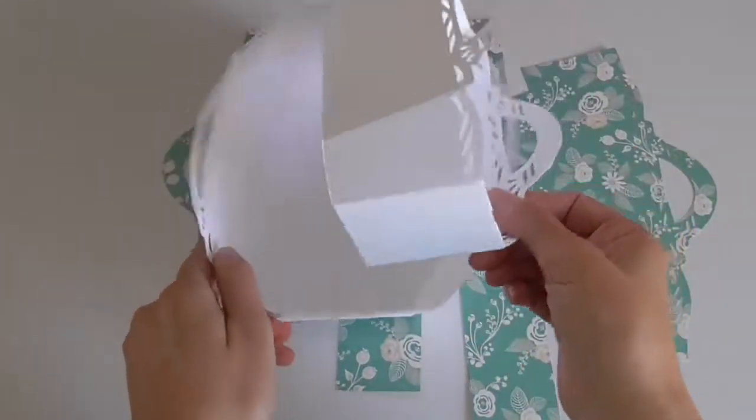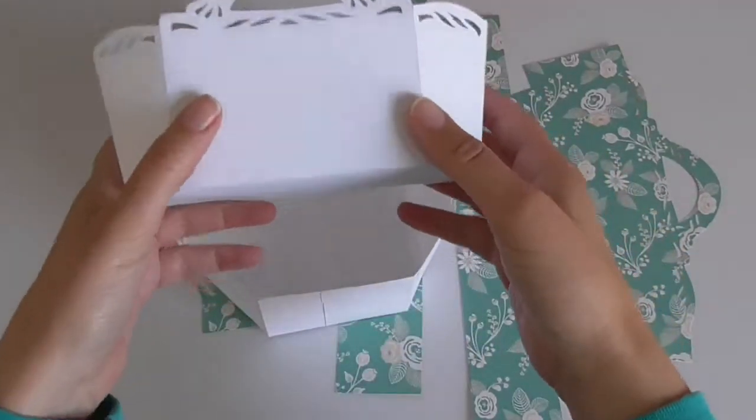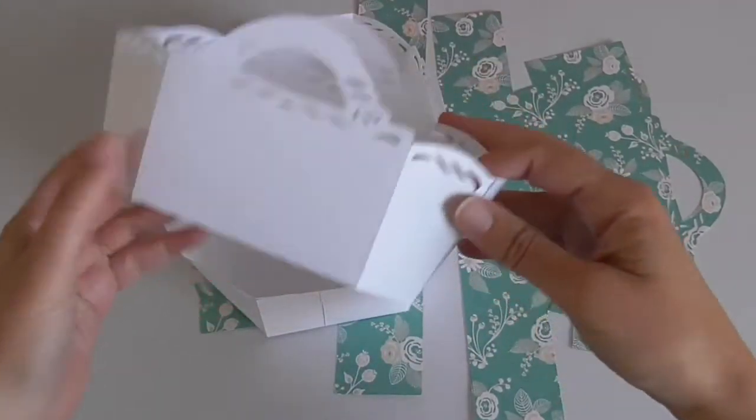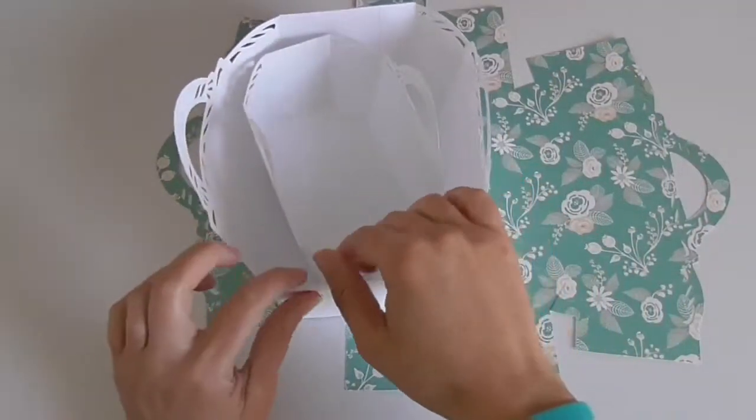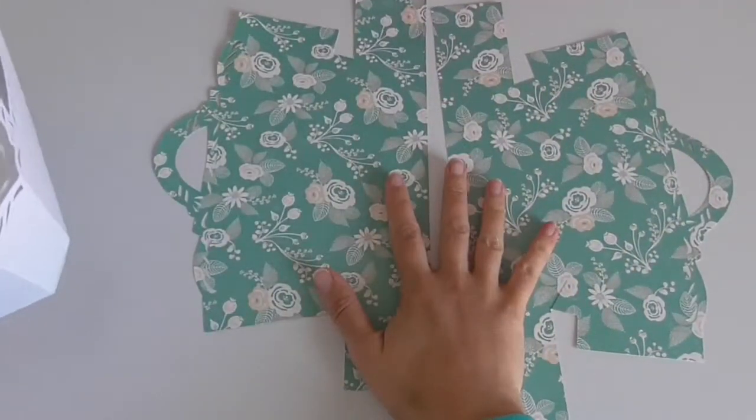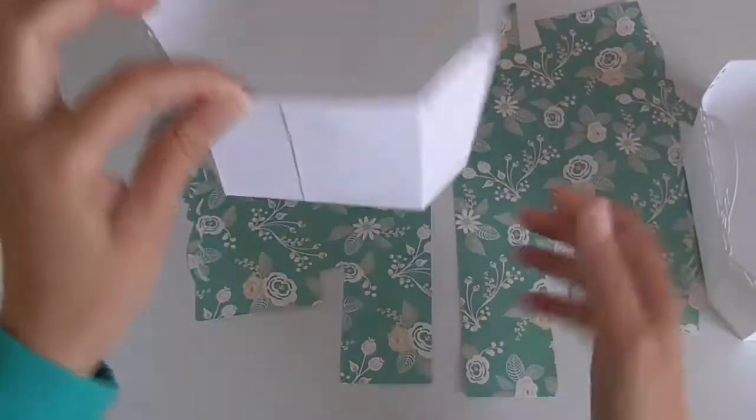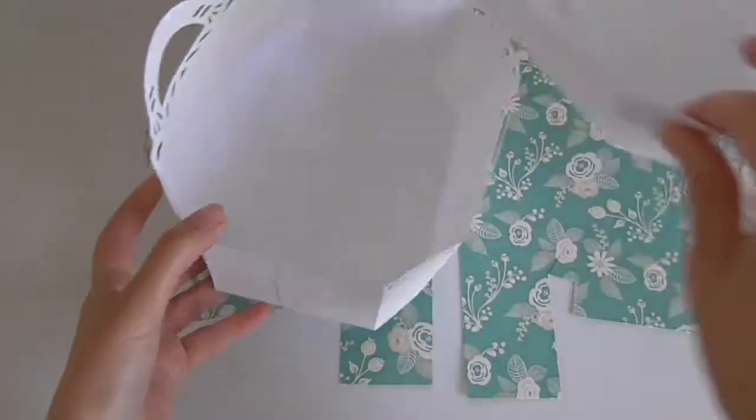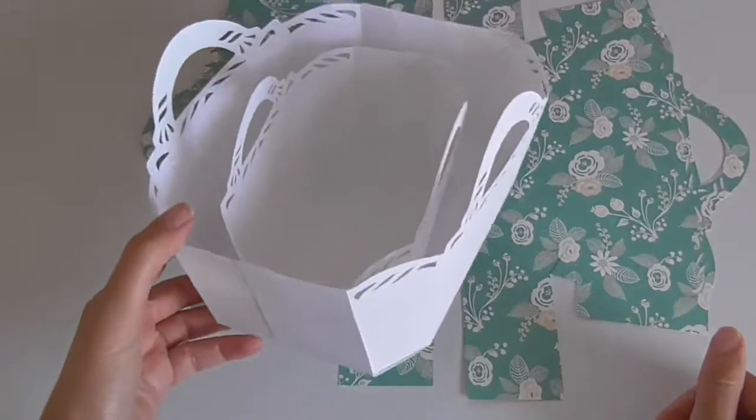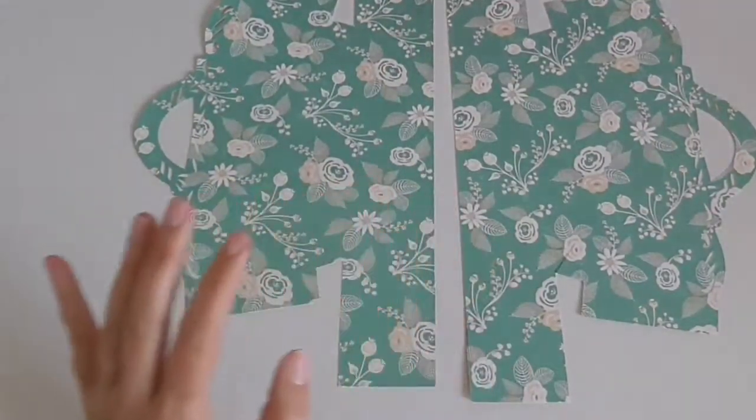And you can see that the small design, the one that fit on just one 12 by 12 piece of paper, is quite smaller than the one that is this design where we cut it in half and cut it out on two pieces of paper and then assembled them together. And so you can choose which one works best for your project. Let me show you how to assemble this.